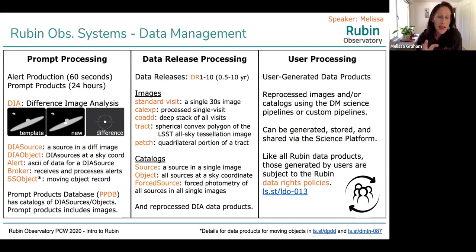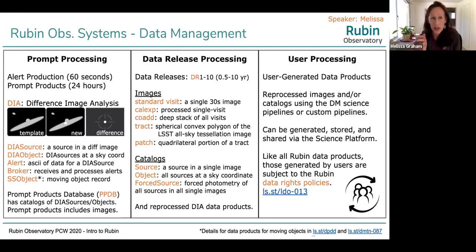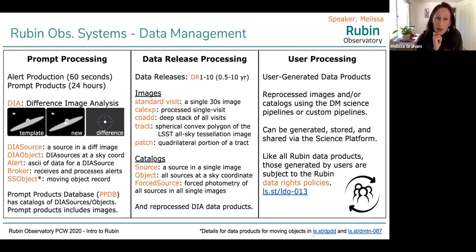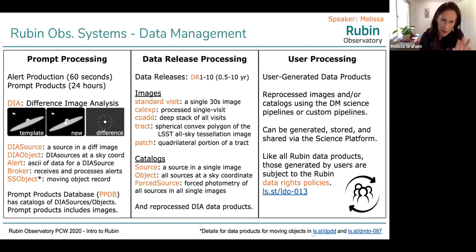There's also the term SS object — solar system object — which is like a DIA object but for moving objects. A lot of the details about SS objects are also in the DPDD and in a data management tech note, DMTN-087, linked at the bottom of this slide. You might also hear the prompt product database, shortened to PPDB — basically the catalogs from which alerts are made, the catalogs of DIA sources and DIA objects.